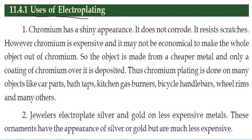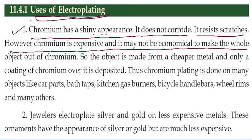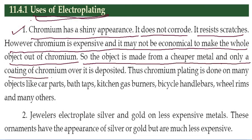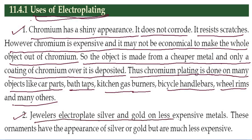Uses of electroplating: chromium has a shiny appearance, does not corrode, and resists scratches. However, chromium is expensive, so objects are made from cheaper metals and only a coating of chromium is deposited over them. Chromium plating is done on car parts, bar tape, kitchen gas burners, bicycle handles, and wheel rims. Second, jewelers electroplate silver and gold on less expensive metals.